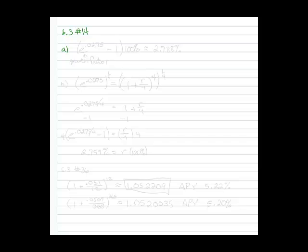So to find the APY, we first need to identify our growth factor. Well, if we have a continuous rate of 2.75%, then e to the .0275 gives us our growth factor.